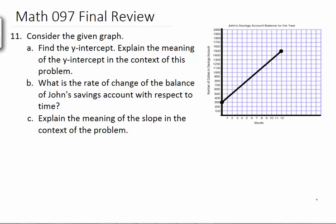So number 11, we have this graph, and we want to find the y-intercept and explain the meaning in context of this problem. First, finding the y-intercept - that's where the graph crosses the y-axis. X is always 0, and you can see that it crosses the axis at 300. To explain this meaning, if you read the top of the graph, it says John's savings account balance for the year, so he starts with $300 in his account. And that's what this means.